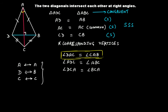Now suppose that the point of intersection of the two diagonals is L. Focus on triangles ALD and ALB — let's call them triangle ALD and triangle ALB.